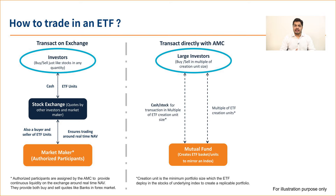Unlike index funds or mutual funds, whenever you are transacting in ETF you will get the NAV which is around the real-time net asset value of the ETF. For example, if yesterday's closing of the ETF was 100 rupees and the market is down by 1% by 12 noon, you will typically get a net asset value for your purchase of around 99 rupees.